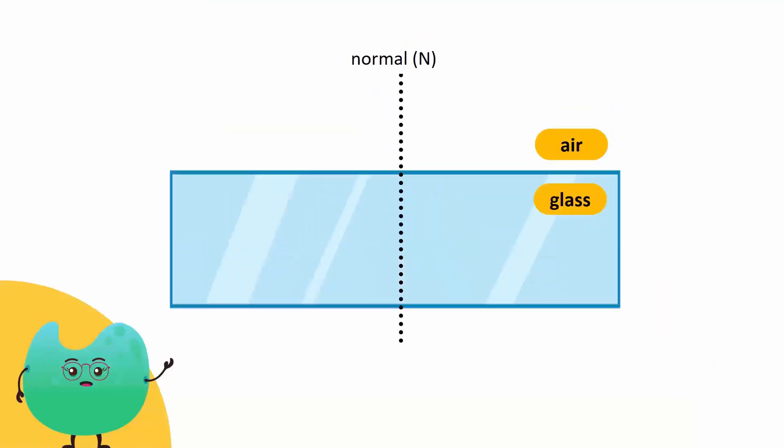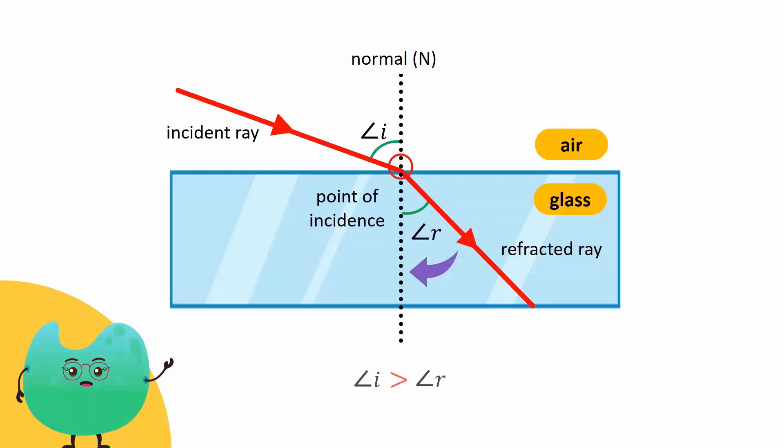When light passes from a rare medium like air to a dense medium like glass, it bends towards the normal at the point of incidence. In this case, angle of incidence is larger than the angle of refraction.